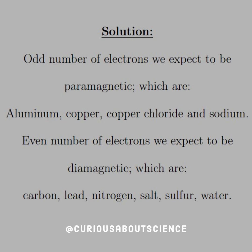So those in the selection of elements and compounds that are paramagnetic would be aluminum, copper, copper chloride, and sodium. Conversely, if they have an even number of electrons, we expect them to be diamagnetic, which are carbon, lead, nitrogen, salt, sulfur, and water.